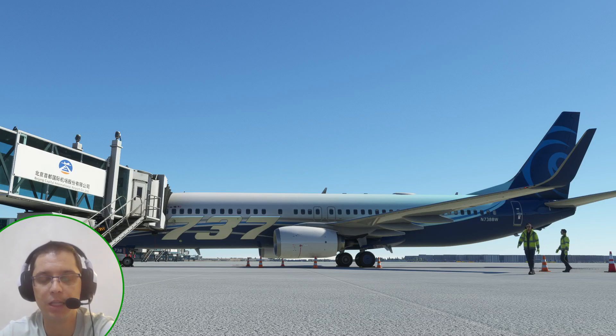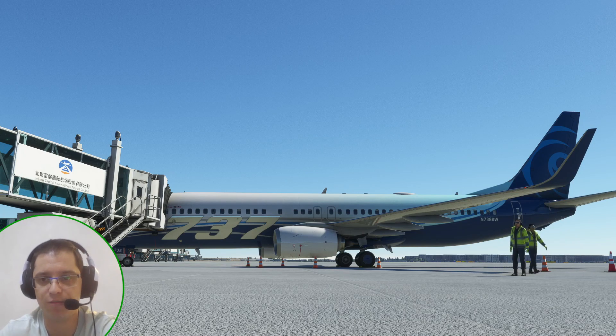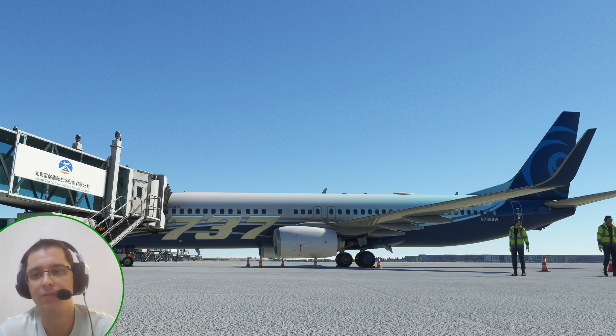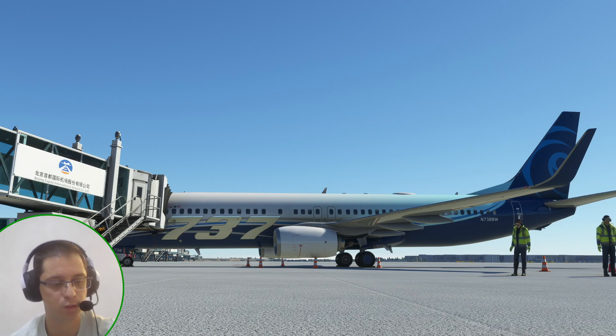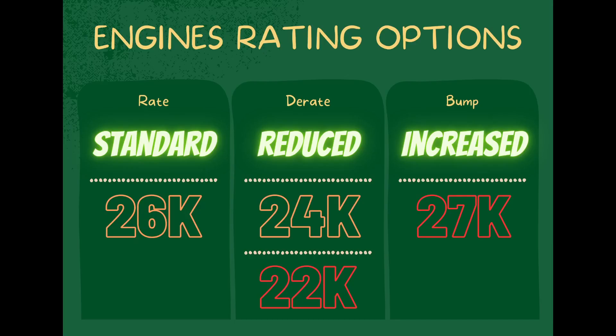So before we begin to talk about engines — specifically about double derate and takeoff bump — I have to explain what it is. For that, I've created a short picture here that you can see right now. We have different rating options for the 737 and I've created this photo based on the options that we have on the 737-800, which is the most common.